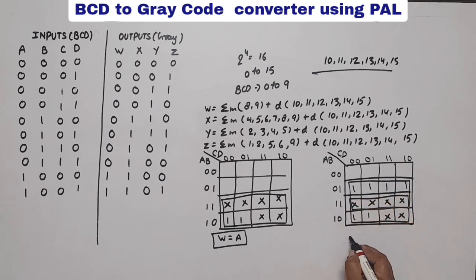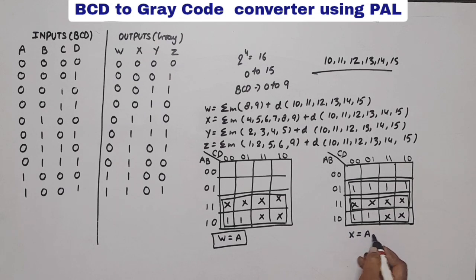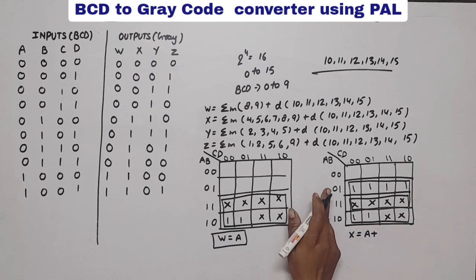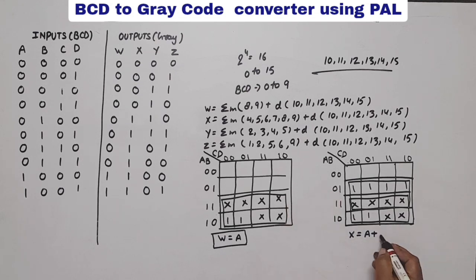From the second octet, X equals A plus B — from this octet the common variable is B.